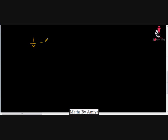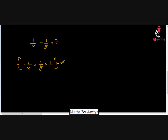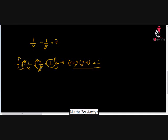Generally CAT or other examinations ask questions like 1/x minus 1/y equal to 7. One way is to simplify and convert to factor form. The direct way: the general form is 1/x plus 1/y equal to 1. From this, the factor form becomes (x minus 1)(y minus 1) equal to 1 — meaning x-minus-numerator times y-minus-numerator equals the product of constant terms, provided RHS is 1.